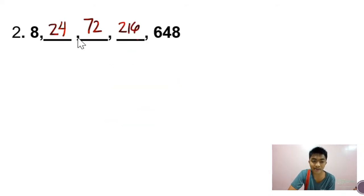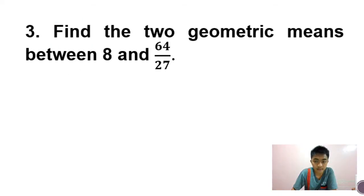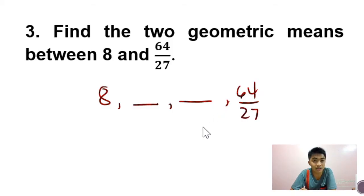So ayan guys, kung may middle term talaga, we can use that method. But actually, hindi palaging ganun ang binibigay na problem. Let's have our last example. Okay, sometimes ganito ang ibibigay na problem. So find the two geometric means between 8 and 64 over 27. So dalawa ang middle term dito. And we cannot use the method that we used on the previous problems. Kasi magagamit lang natin yung method na yun kung may isang middle term. In this case, dalawa ang middle term.